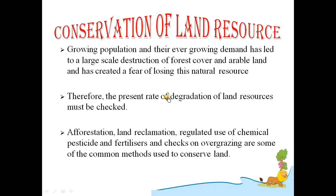What is arable? Arable means suitable for agriculture. Therefore, the present rate of degradation of land resources must be checked. By afforestation, land reclamation, regulated use of chemical pesticides and fertilizers, and checks on overgrazing by animals are some of the common methods used to conserve land.